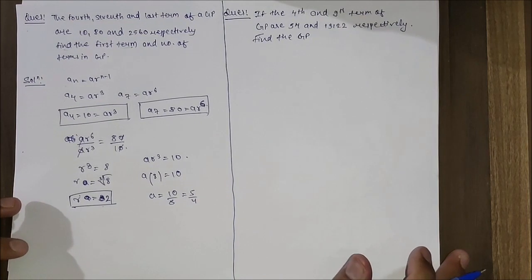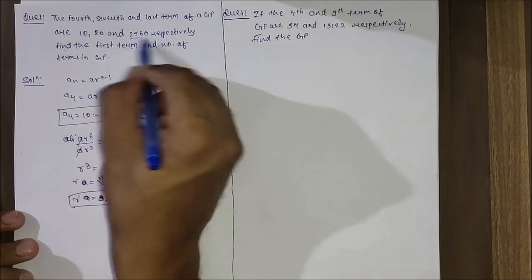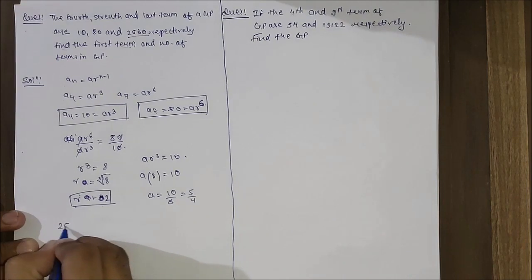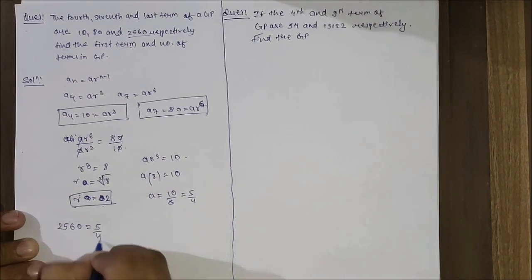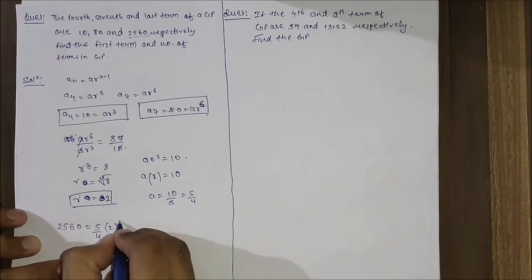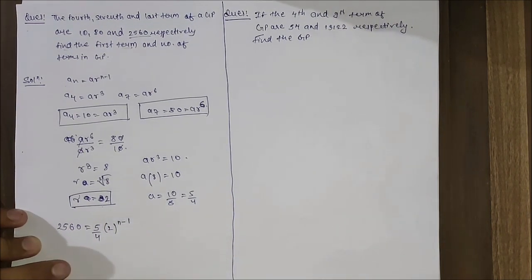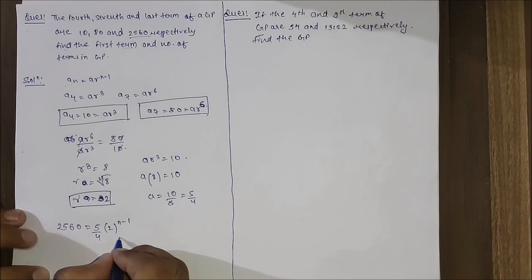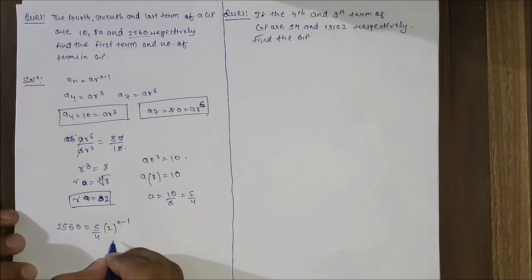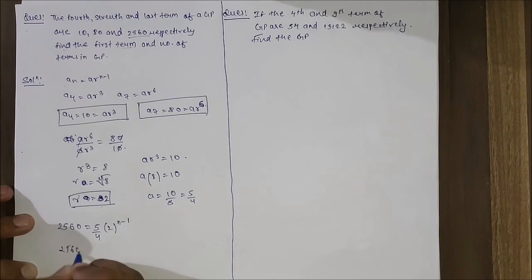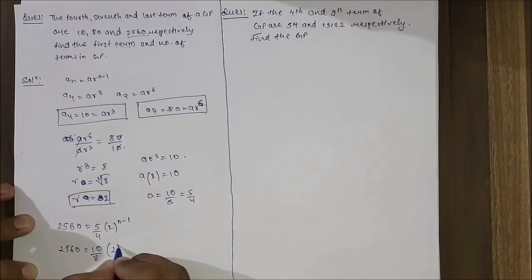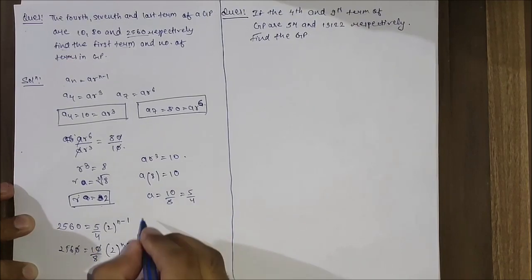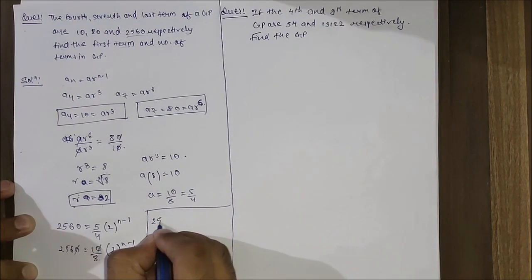So the first part of the question is solved - we found the first term. Now we have to find the number of terms in the GP. The last term is 2560, so 2560 equals a·r^(n-1). We know a equals 5 by 4, r equals 2, so let's solve it. We can write 2560 equals 5 by 4 times 2^(n-1).